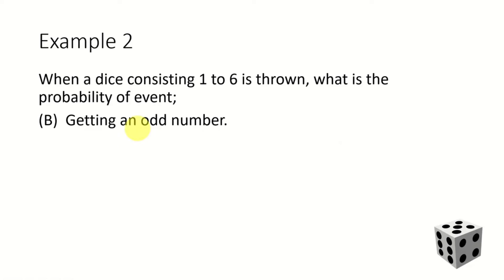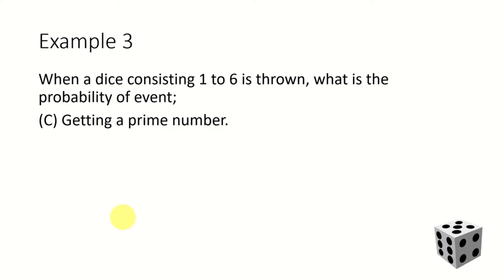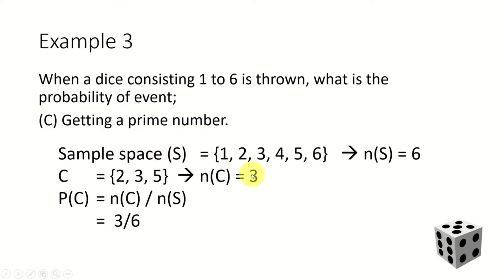Let's look at a second example with the same experiment. The event is now getting an odd number. The sample space is the same. Our event covers three outcomes: one, three, and five. So the number of elements in event B is three, and the probability is 3 divided by 6. In probability, we usually don't simplify — rather than writing 1/2, we write 3/6. For the third example, what is the probability of getting a prime number? The prime numbers are two, three, and five — three elements in our event — so the probability is again 3 divided by 6.